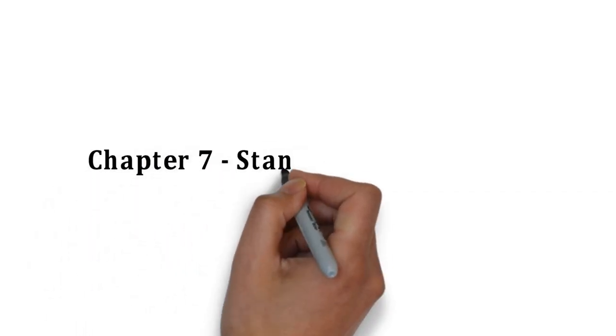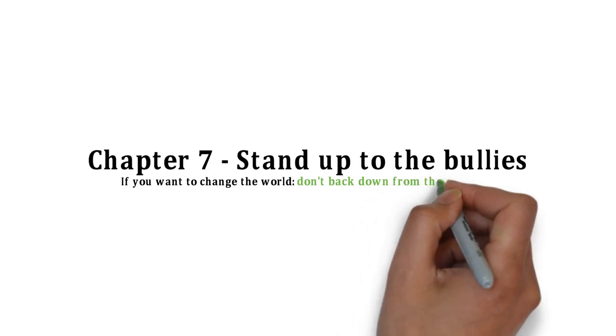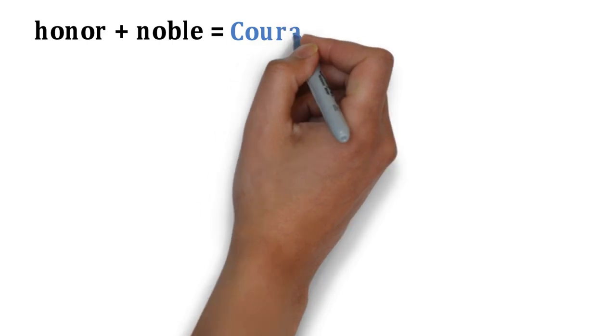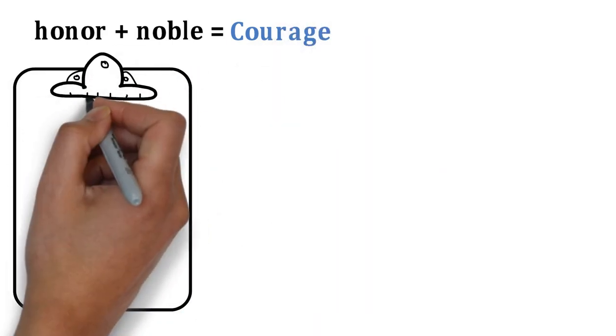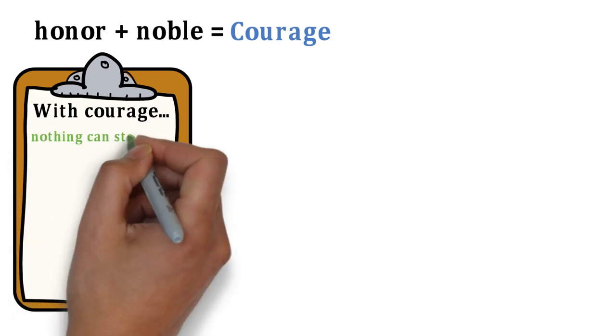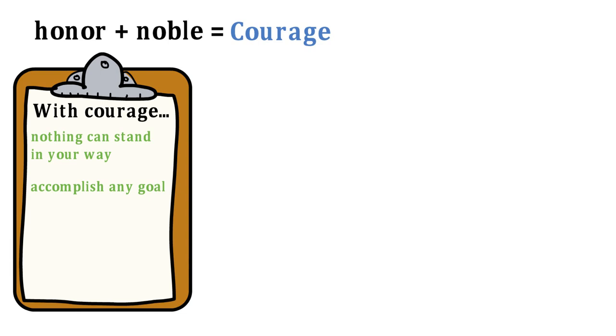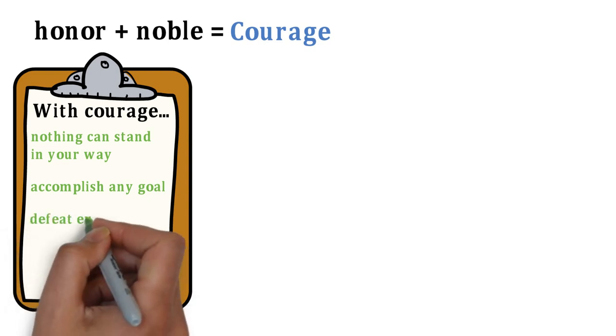Chapter 7: Stand Up To The Bullies. If you want to change the world, don't back down from the sharks. Have a goal that is honorable and noble, and it will give you courage. Courage is a remarkable quality. With it, nothing and nobody can stand in your way. With it, you can accomplish any goal. With it, you can defy and defeat evil.